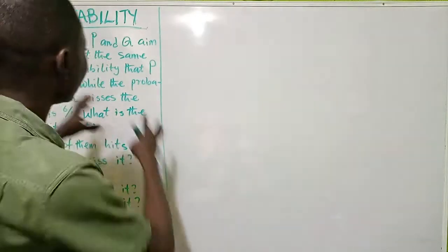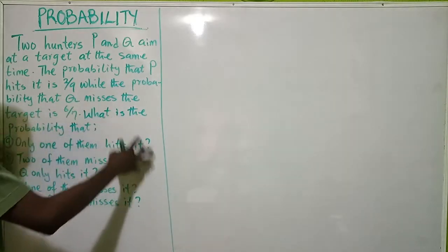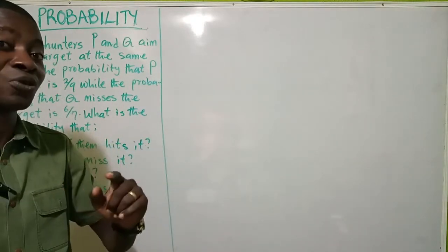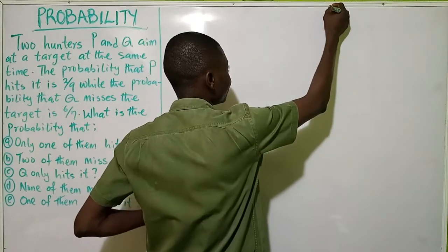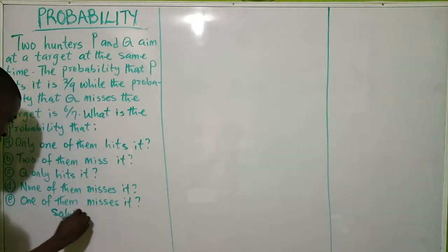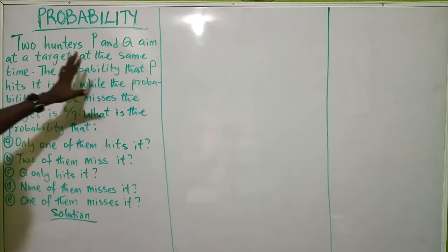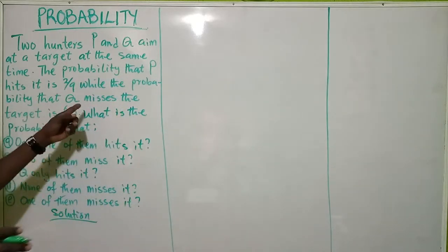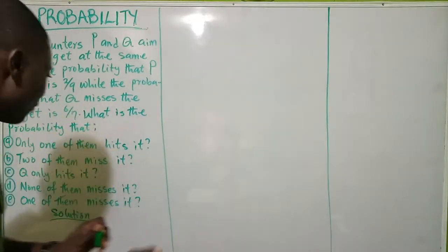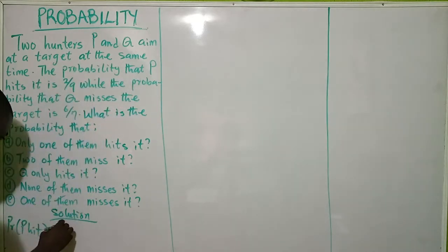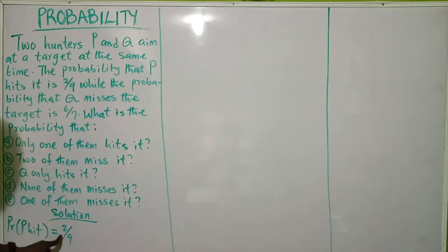Now to answer this question we need to bring out some information from this question. Once you're able to do that, it will be easy to answer these five questions because it's actually very simple. So let's write our solution. There are two hunters P and Q, both of them aim at the target. The probability that P hits the target is given in the question as 2 over 9.